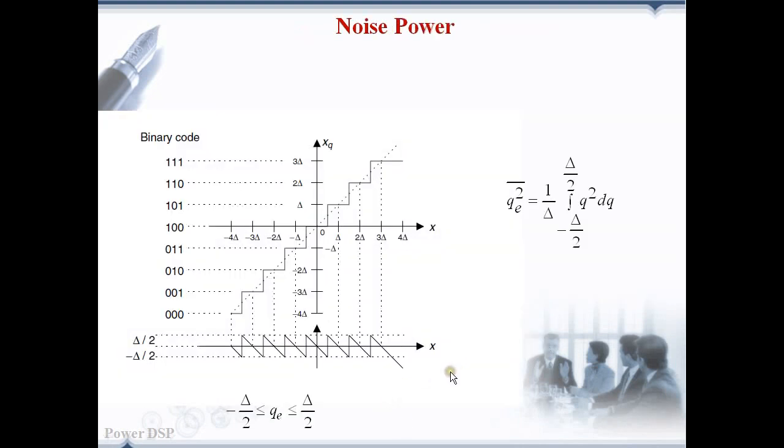Since the quantization noise fall in the range minus del by 2 to plus del by 2 we can find the noise power by the equation 1 by del of integrating q squared from minus del by 2 to plus del by 2.